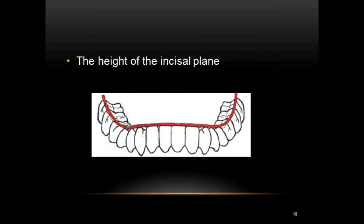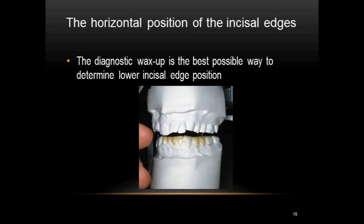Next is the height of the incisal plane. Ideally the lower incisal plane is a gentle curve and it follows the posterior occlusal plane — there should not be any sudden variation in this smooth occlusal plane. The last factor is the horizontal position of the incisal edges. The key to determining this is to establish a stable centric contact with the lingual surface of the upper anterior, best done using diagnostic wax-ups. Also, the incisal edge shape should match the age and sex of the patient — older patients will have a sharper labio-incisal angle compared to younger patients with rounded incisal edges.